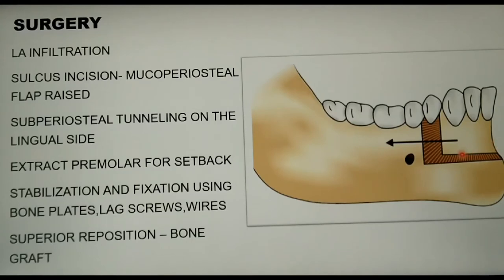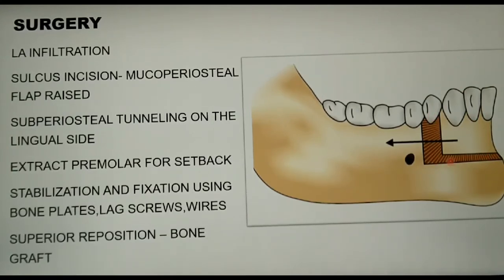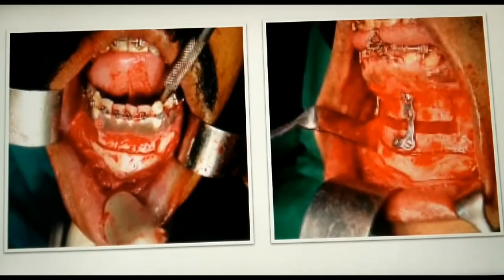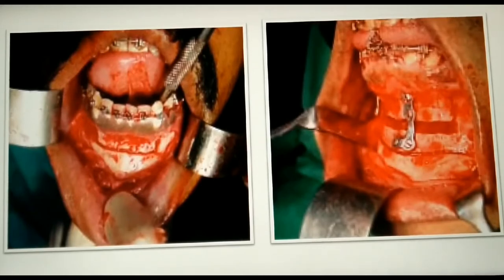If the intended plan is to reposition the dentoalveolar segment superiorly, there is a gap left at the osteotomy site, which is later filled using bone grafts. As seen in these photographs, this is the osteotomy performed, following which the dentoalveolar segment can be repositioned as required. Once repositioned, it is stabilized and fixed using bone plates, lag screws, or wires.